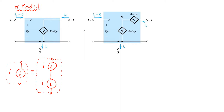The reason we might want to do this is that making this replacement creates a fictitious node between the two current sources, which we can label node X. Since these are ideal current sources, the current they conduct is independent of the voltage across them. So the voltage at node X can be absolutely anything — it has no effect on the rest of the circuit. For example, this fictitious voltage VX between the two current sources can be varying all over the place and it really doesn't matter, because those are ideal current sources.